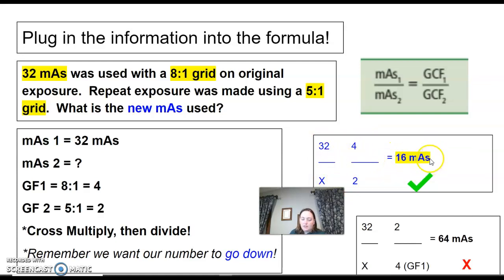This is giving me an mAs of 16. Does it make sense? Yes, because I was using 32 to start. I'm going from an 8:1 grid to a 5:1. So I'm going down in my grid ratio. My mAs has to go down. If you've mismatched your numbers and put them in the wrong spots, it's going to go up to 64, and then you'll know that you've got a problem somewhere.